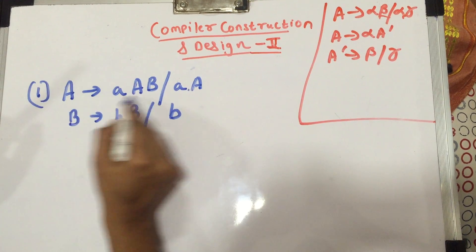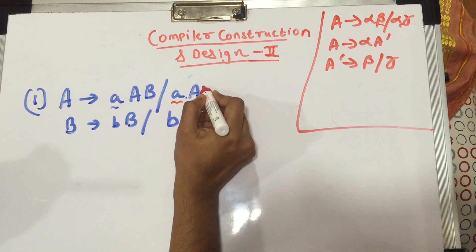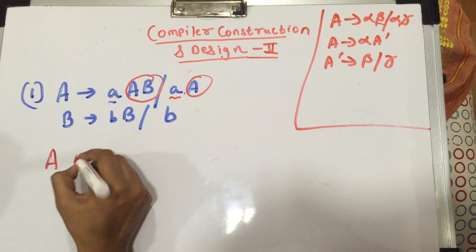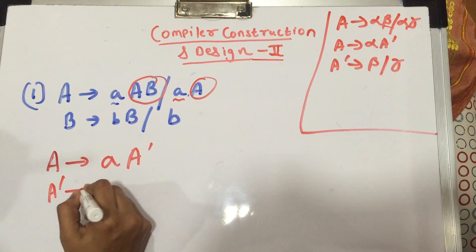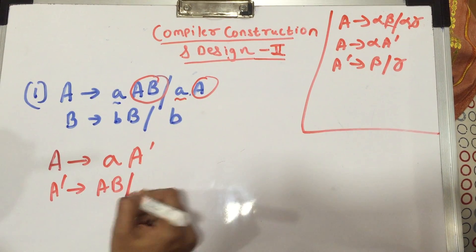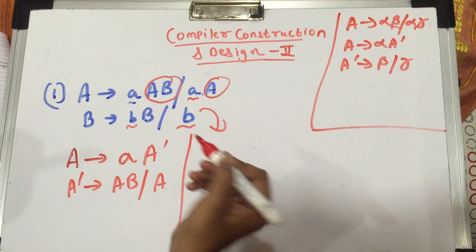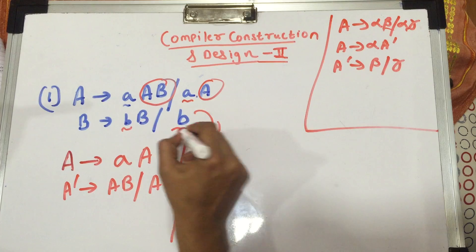For the first one you have a and a common, so these are the parts being left out. You write A gives you small a A dash, and A dash gives you aAB slash a. Now for this one, this b is common.